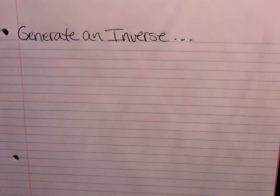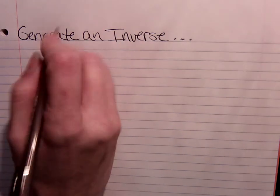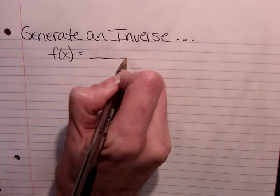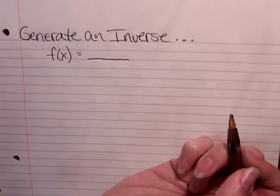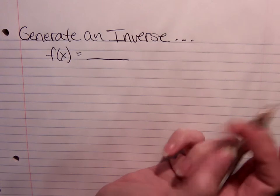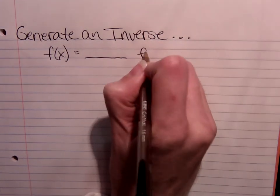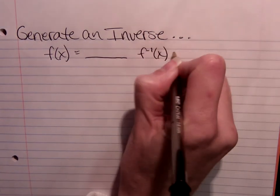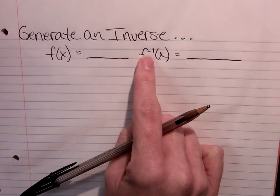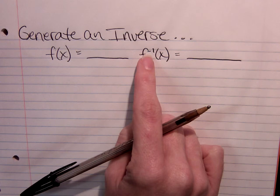All right, let's look a little closer at generating an inverse of a function. So remember our notation f of x equals whatever our function is. And if I use all of the inverse operations, the ones that undo everything after switching out x and y, I'll end up with the inverse function f to the negative 1 of x using that notation just means inverse.